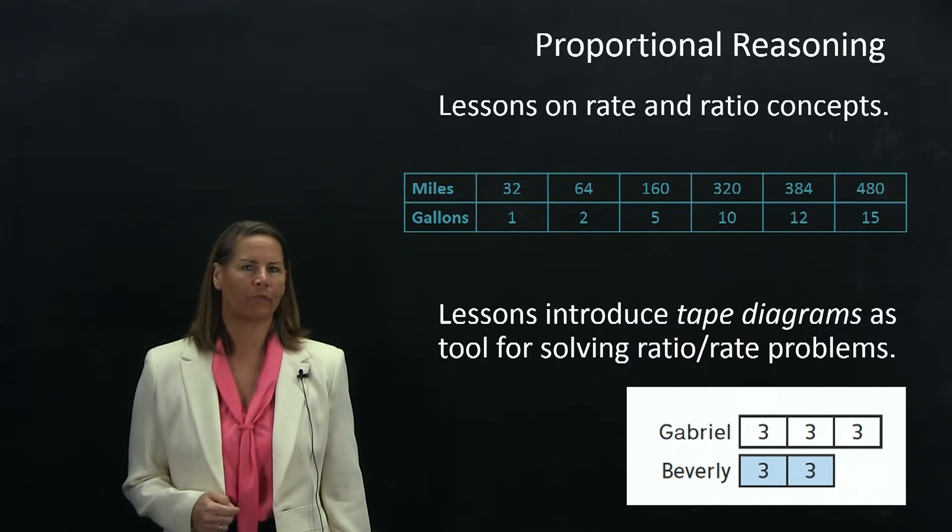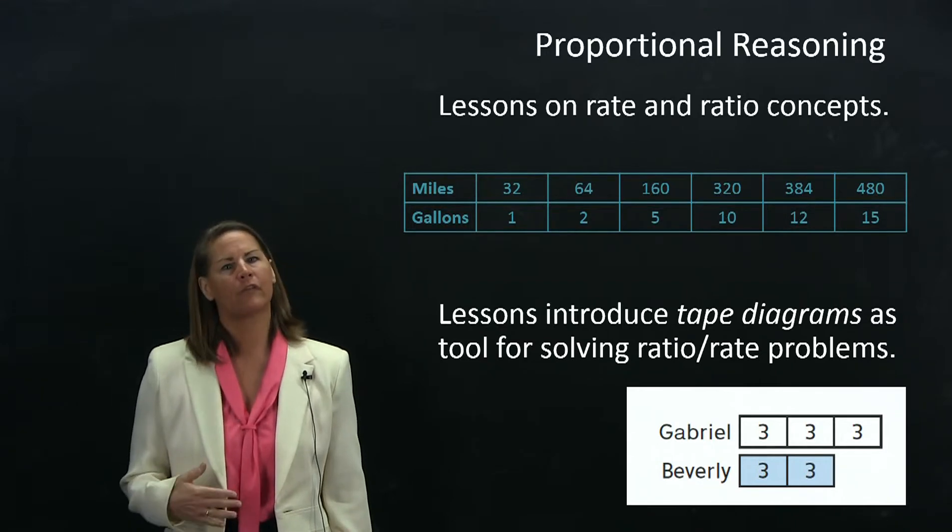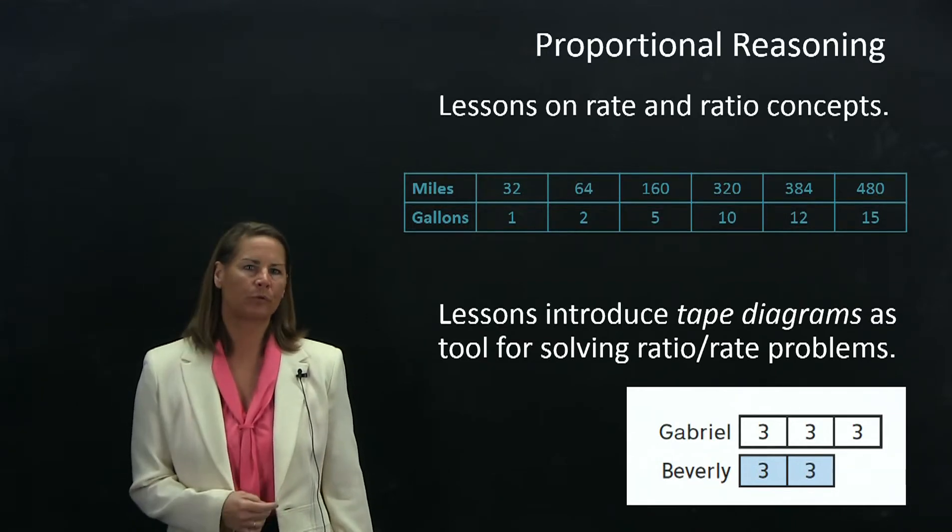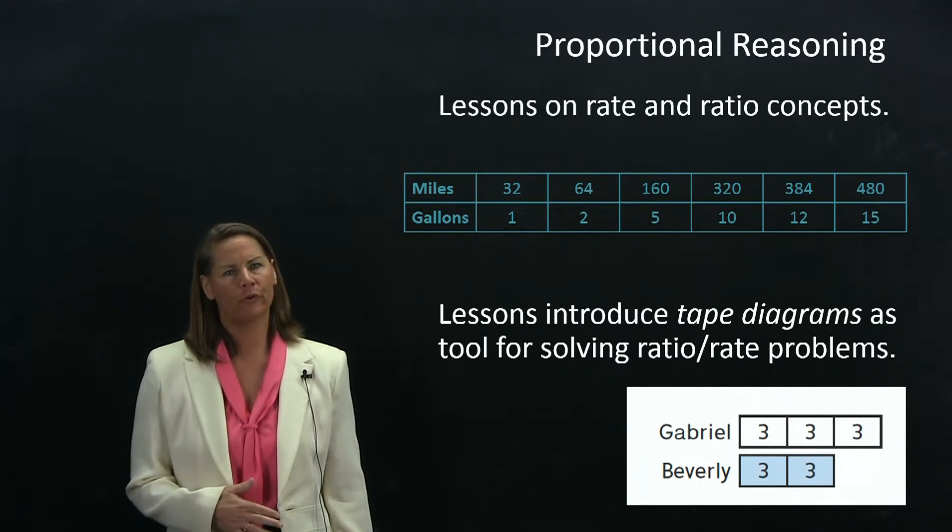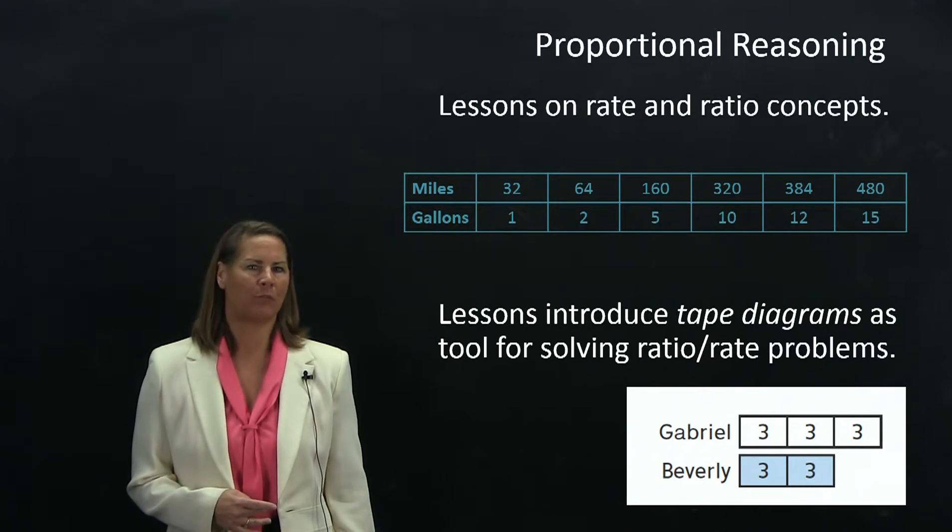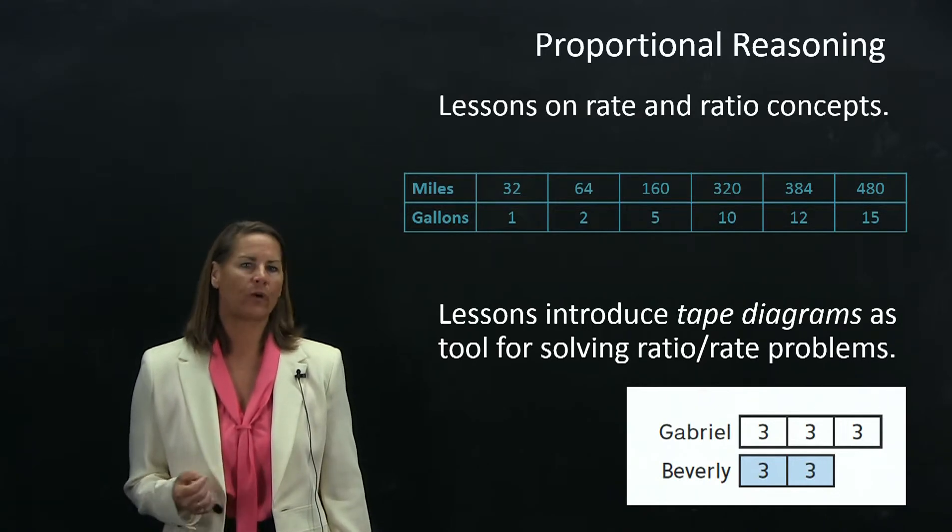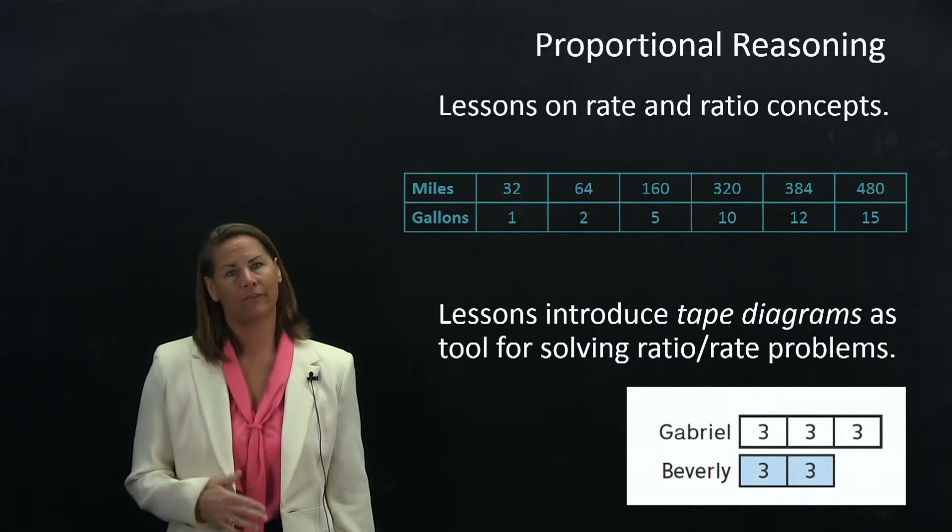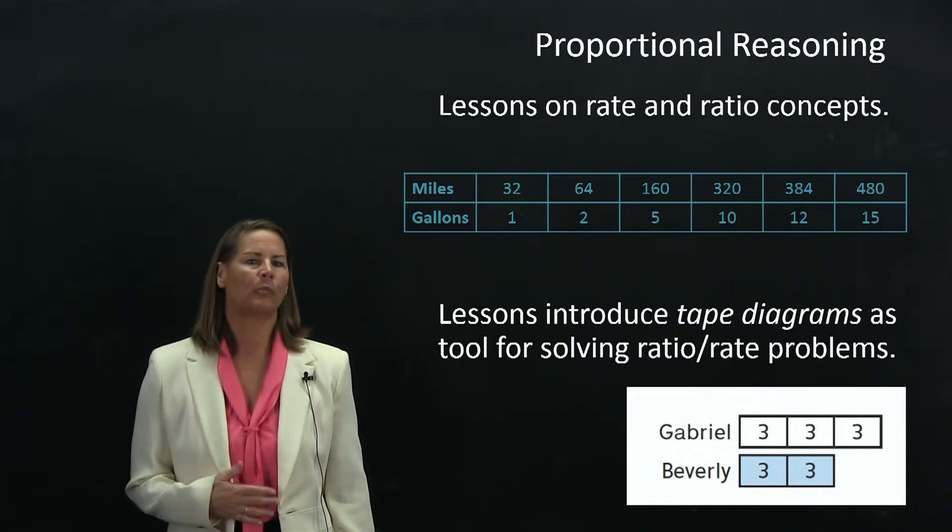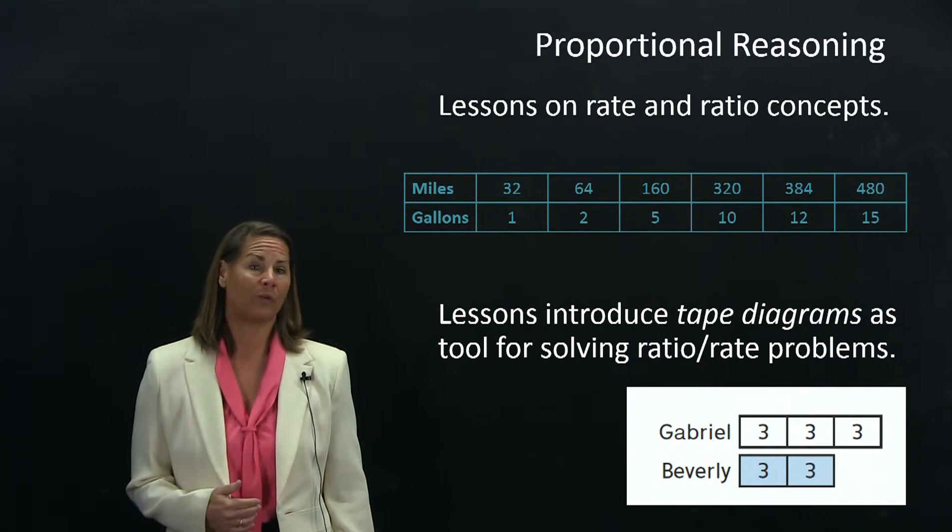Let's say Beverly has six pencils. The way the diagram works is I split her pencils up into equivalent groups that fill her boxes. She's got three pencils in each box. In order to preserve that relationship of three to two, every box has to have the same number of pencils in it. I put three in each of Gabriel's boxes and now I can see that nine to six preserves the relationship of three to two.